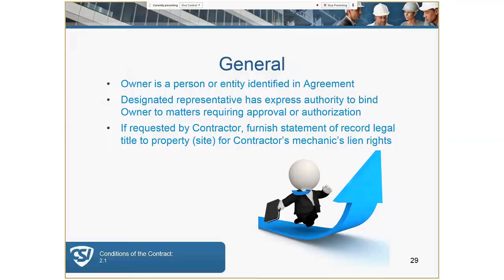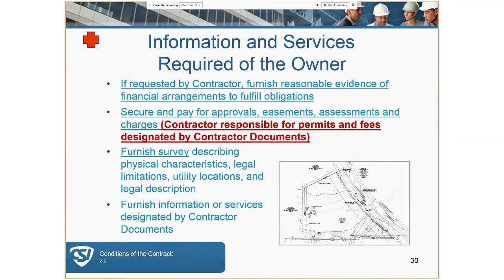The owner will be identified in the document and must designate a representative authorized to bind the owner for future modifications or directives. More likely than not, the owner is not going to be on site every day, but their representative must be able to bind the owner. The owner may be requested to provide assurance of funding, and is responsible to provide a survey. Building and site permit fees might be paid by the owner as part of the pre-bid process; utility and tap fees as well.